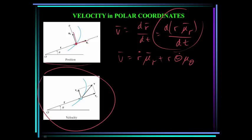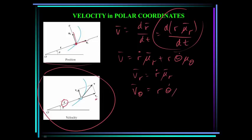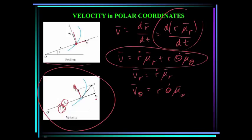We can see this in the bottom drawing. The velocity component v sub r equals r-dot times u sub r — it's in the u sub r direction and is simply the time rate of change of r. As r gets longer, you get a velocity component in the u sub r direction. The component in the theta direction is r times theta-dot times u sub theta. As the angle changes, theta-dot in radians per second multiplied by r gives this velocity component. So the key result is: velocity equals r-dot in the u sub r direction plus r times theta-dot in the u sub theta direction.